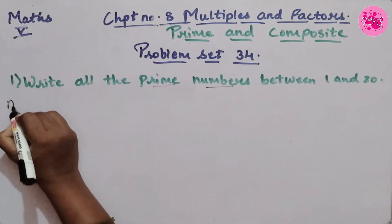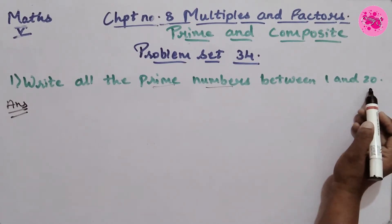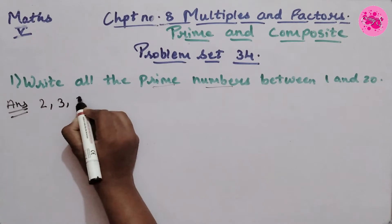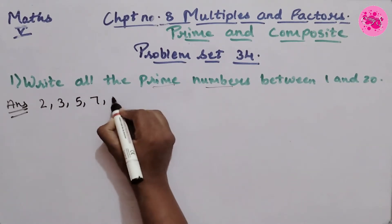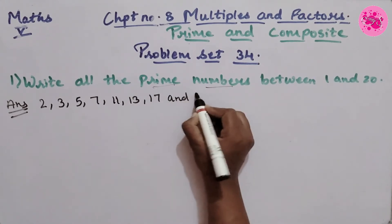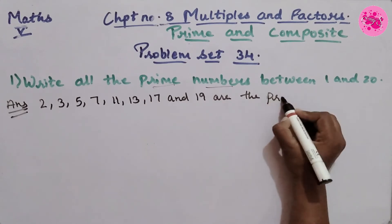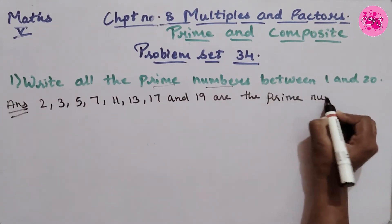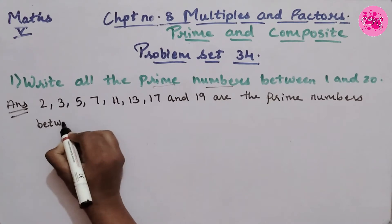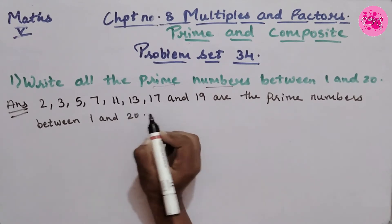So the answer: we have to write from 1 to 20 all the prime numbers. The prime numbers are 2, 3, 5, 7, 11, 13, 17, and 19. These are the prime numbers between 1 and 20.